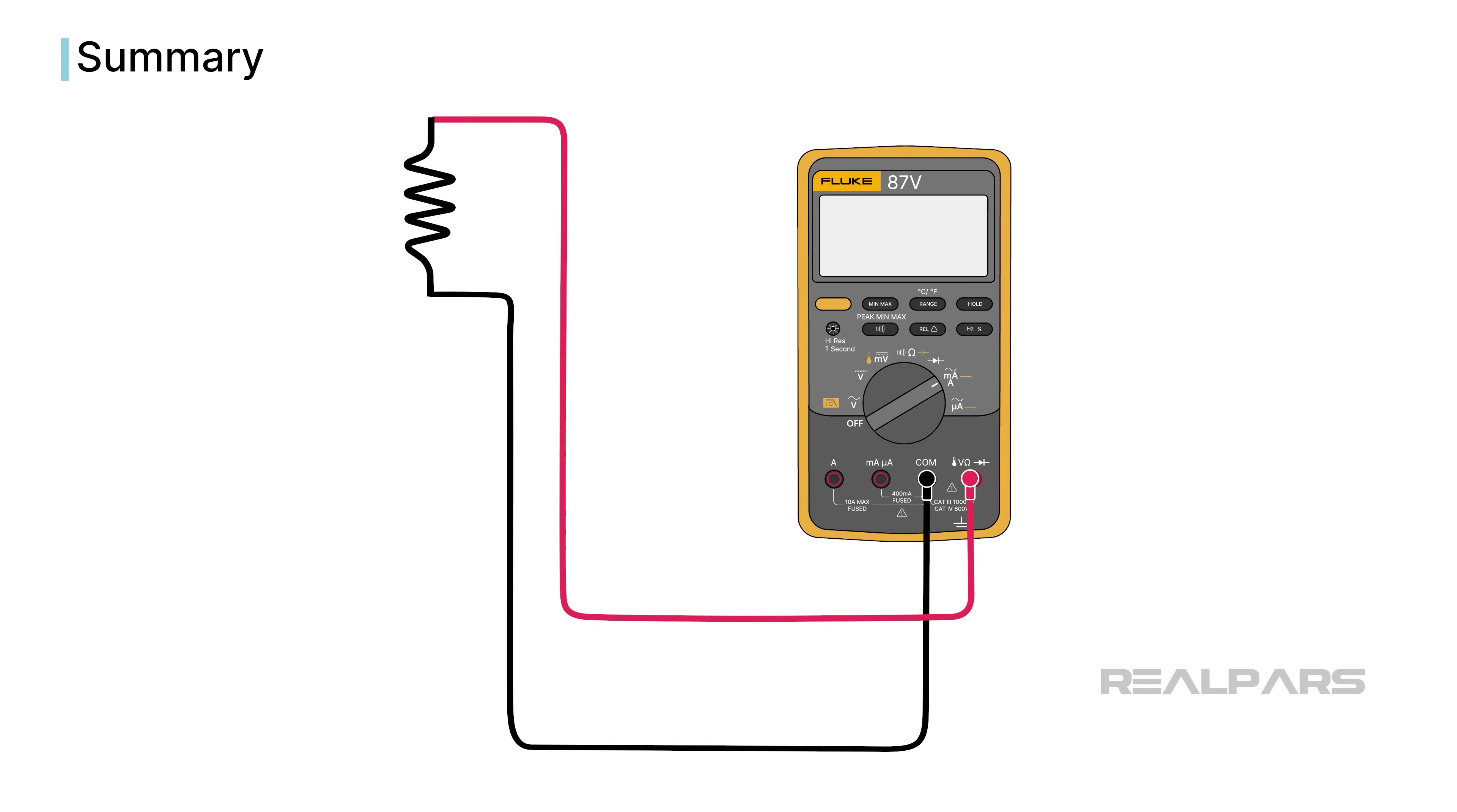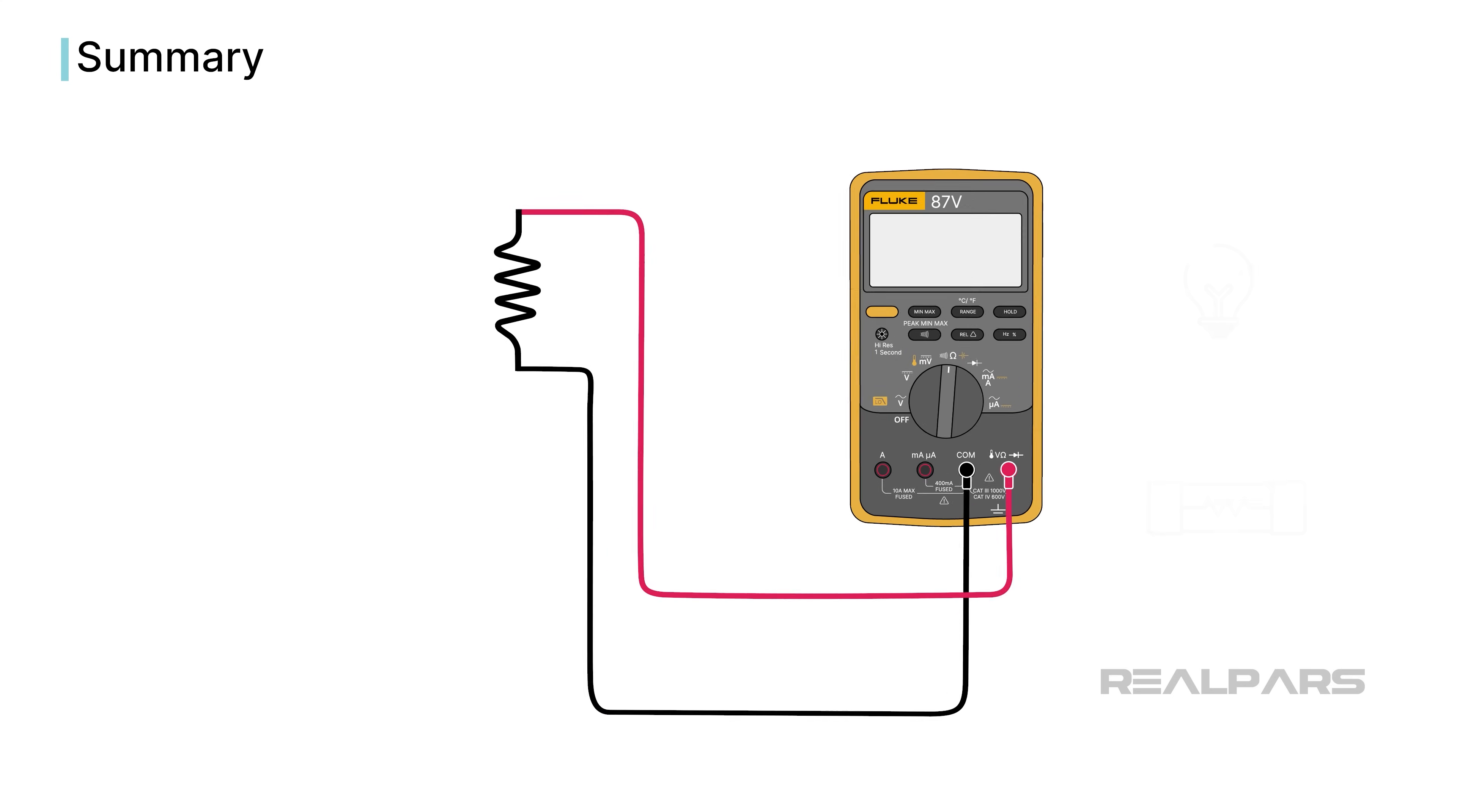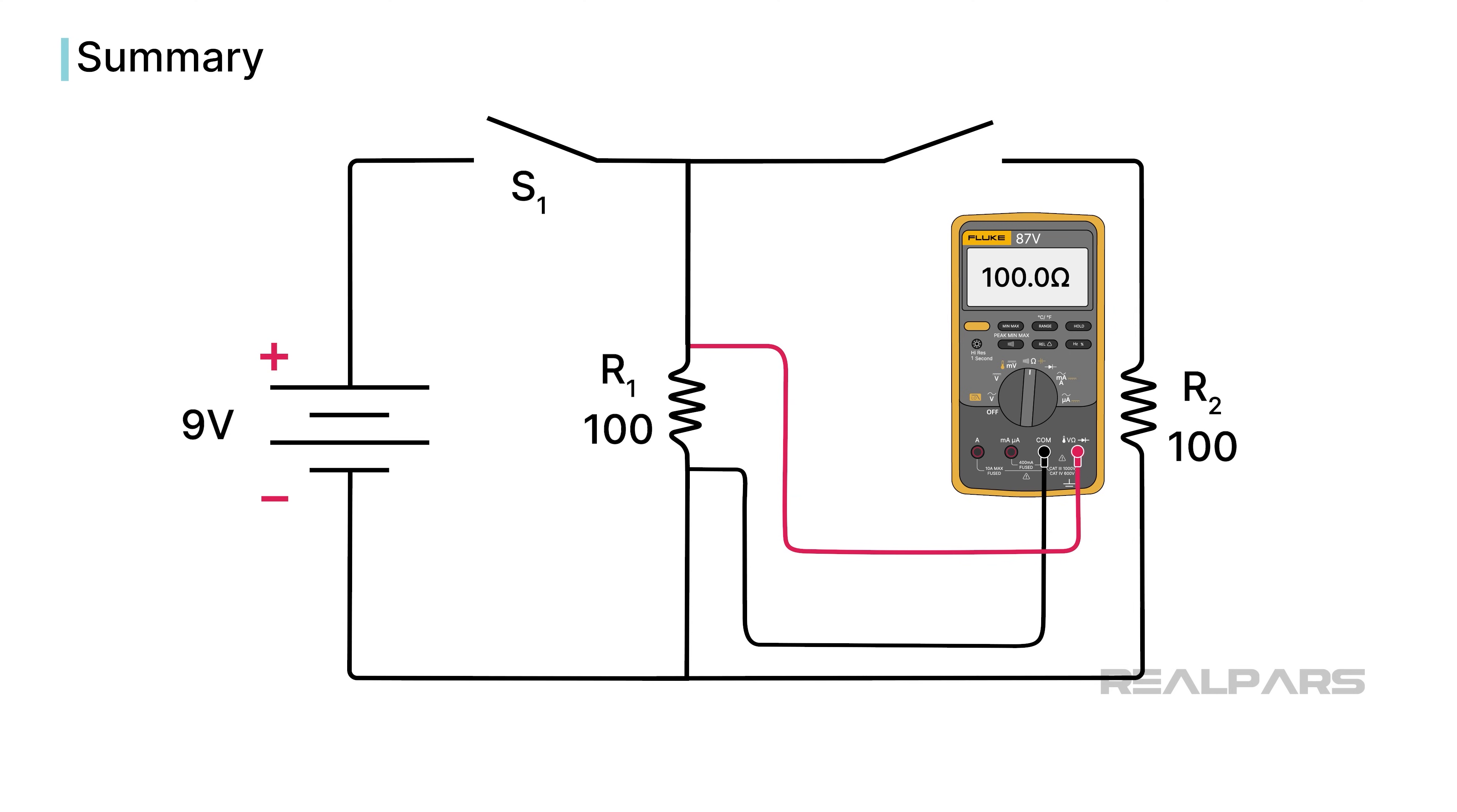The resistance function uses the DMM's internal power to measure passive components like fuses and lamps. Proper isolation of the device under test is crucial for accurate resistance readings.